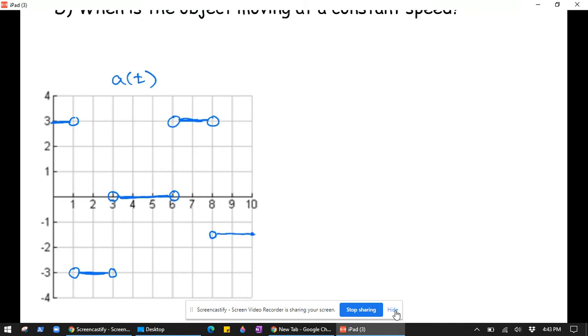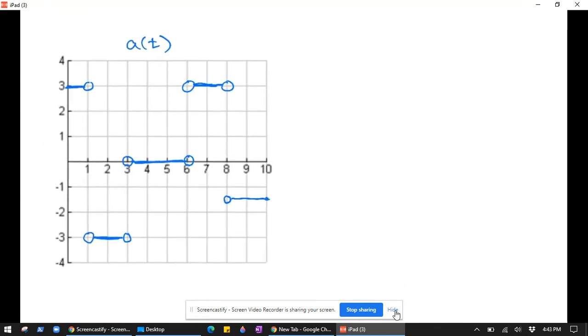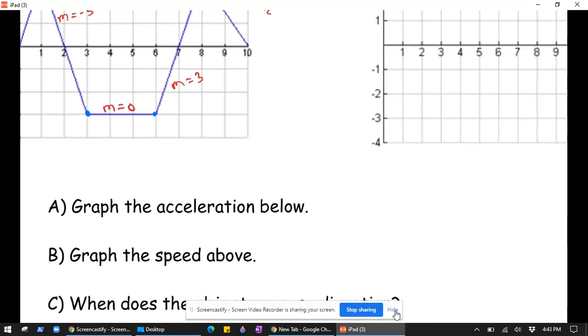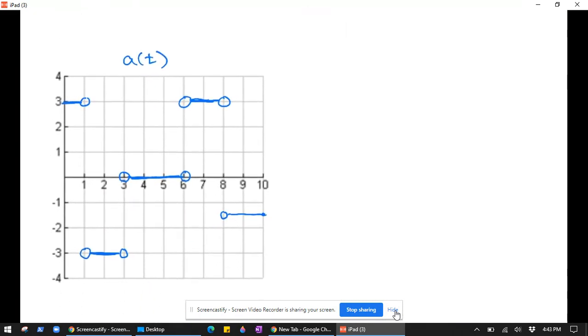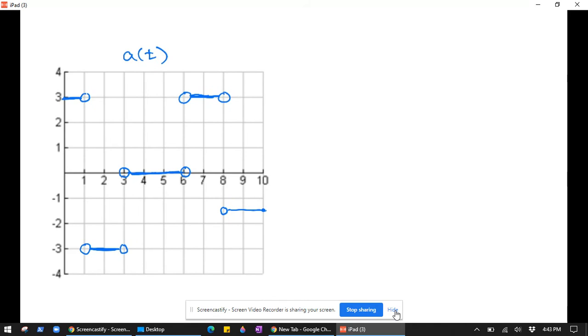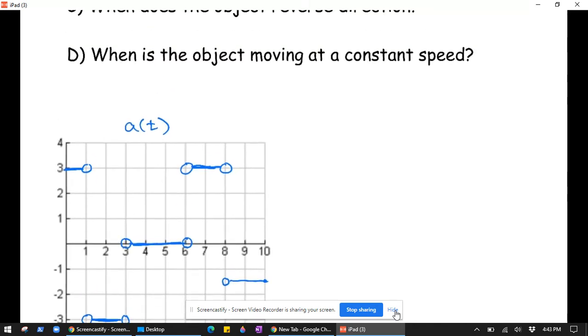So it's kind of a strange-looking acceleration graph. It's not anything you'd see in the real world, but it's a good exercise. And again, those open circles are important because the derivative doesn't exist at these corners, which means the derivative graph can't have values at those places, and that's why we have these open circles here.